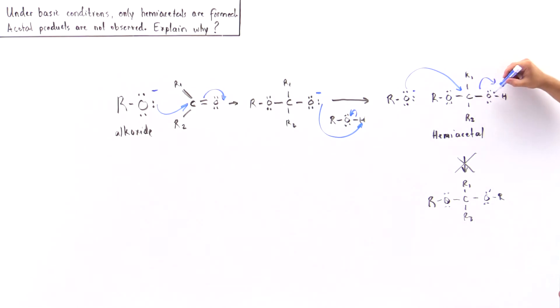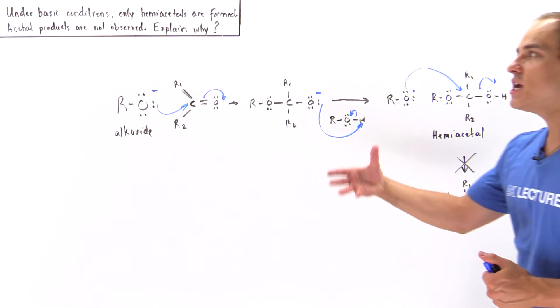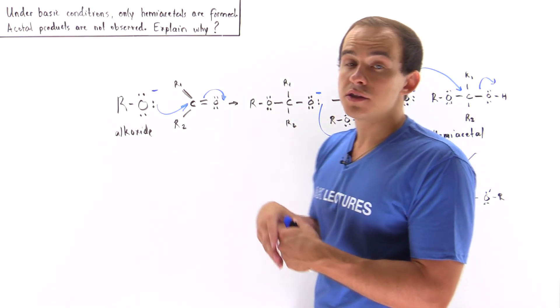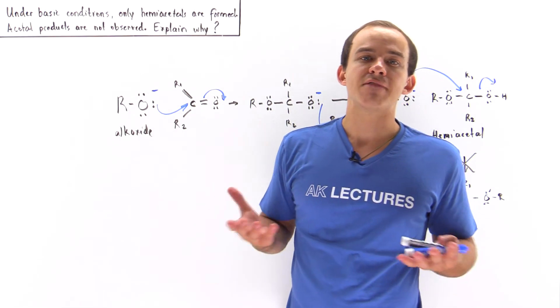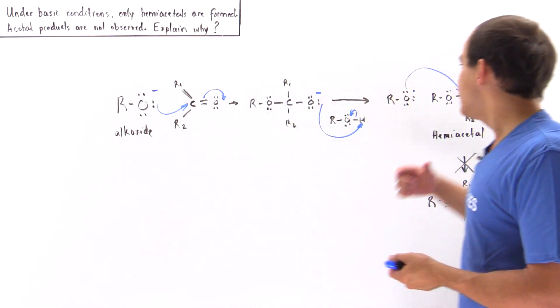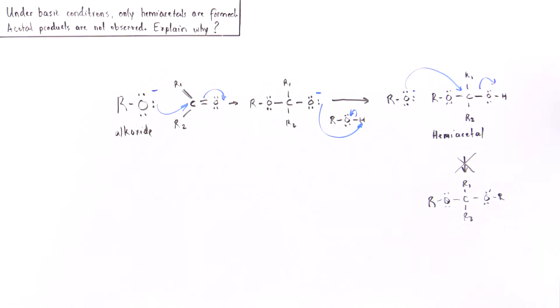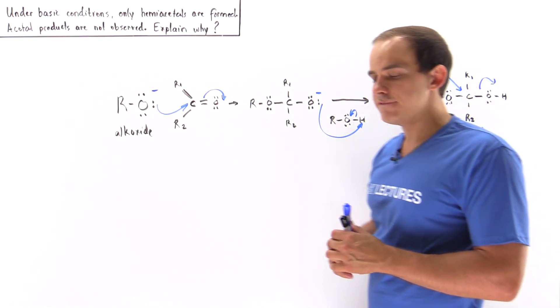This will not detach itself and this will not leave, and so we cannot actually form this product because this bond is relatively strong. It's too strong and too stable to actually break off. And so this reaction cannot actually take place, and we cannot form our acetal product because we are under basic conditions. Under basic conditions, we simply do not have our H atom to protonate this hydroxide to transform it into a good leaving group.